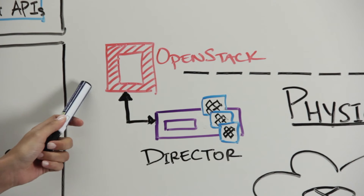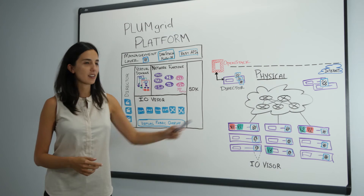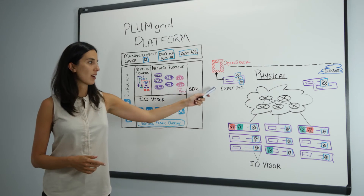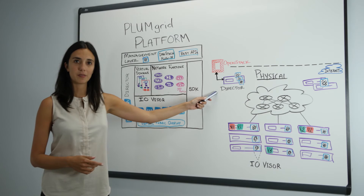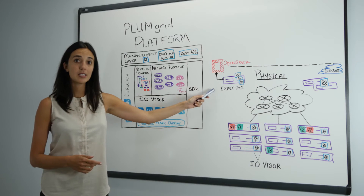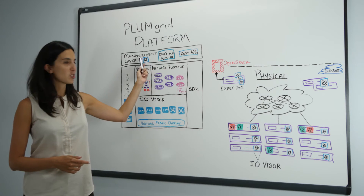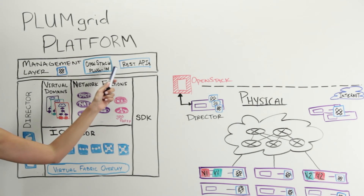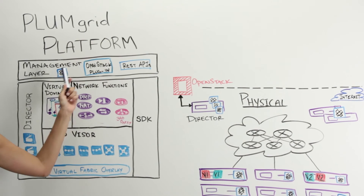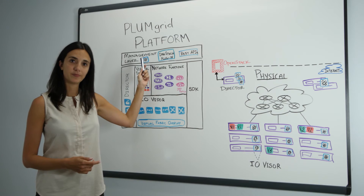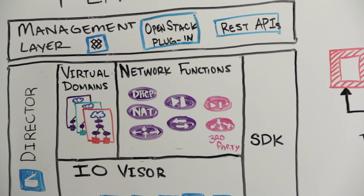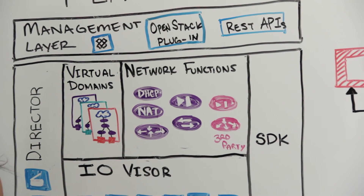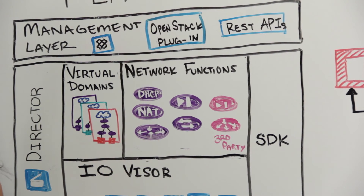I now added OpenStack to this data center deployment. Let's look at how OpenStack interacts with the PlumGrid platform. This happens through the management layer, which includes an OpenStack plugin, REST API, as well as the PlumGrid management console. Leveraging the management layer, users can now start creating virtual domains.